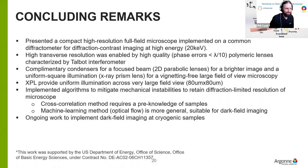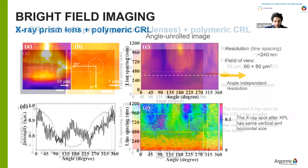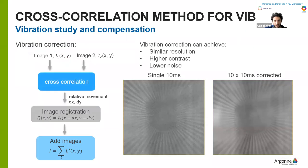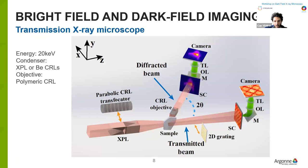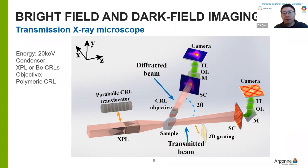Question from John regarding the polymer lenses: could you roughly estimate how long you have been using them, and have they shown any degradation? They haven't used the polymer lens continuously for several weeks, but they have done at least five or six experiments, each time using them for at least three or four days. So the polymer lens has lasted for the equivalent of several weeks of use and they haven't noticed any damage.